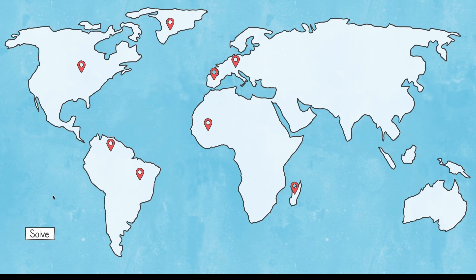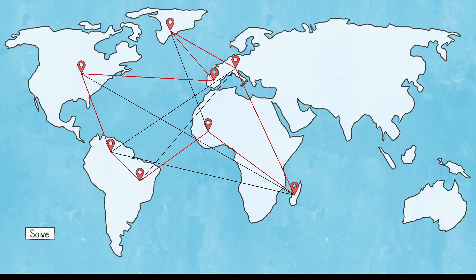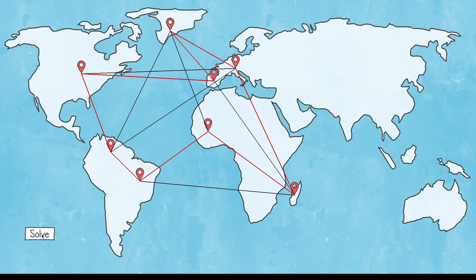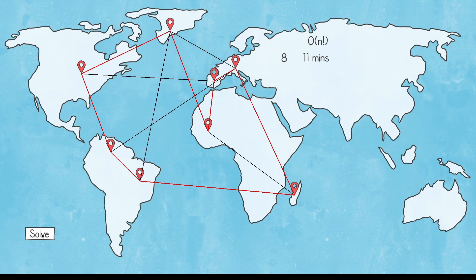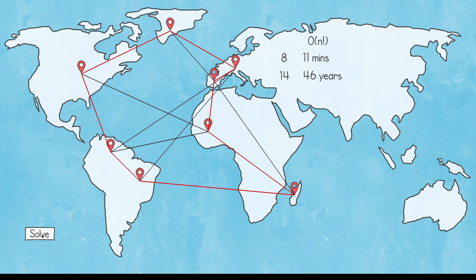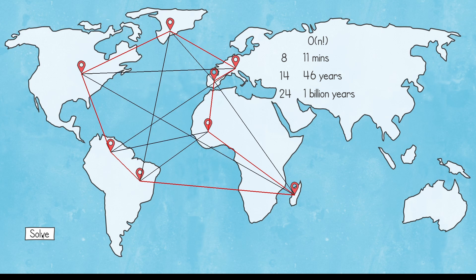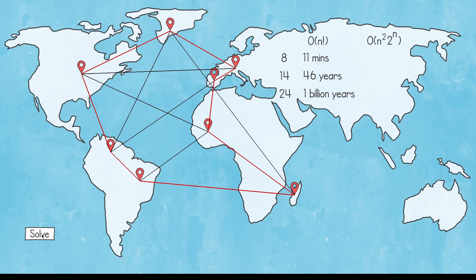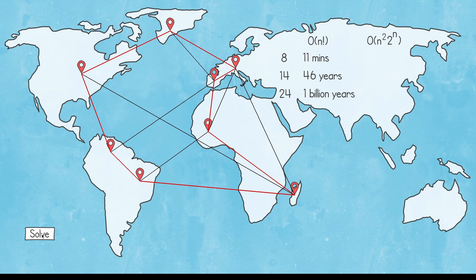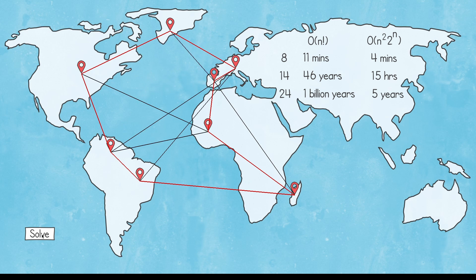If I add just a couple more points and hit Solve, it is going to take a lot longer, because this algorithm — the one trying every single permutation — has a runtime complexity of n factorial. With just 8 points it will take around 11 minutes; with 14 points, 46 years; and with 24 points, more than a billion years. There is a faster algorithm using dynamic programming with a runtime complexity of n squared times 2 to the power of n, which is a big improvement, but it still has exponential complexity. For 24 points that would only take 5 years instead of a billion — a huge improvement, but still completely unusable.